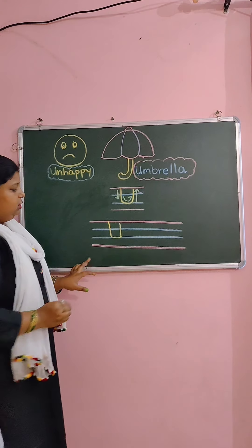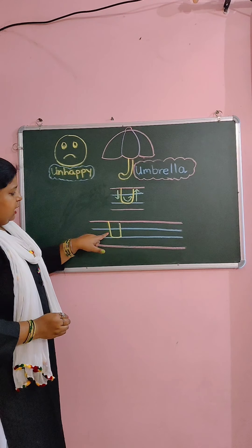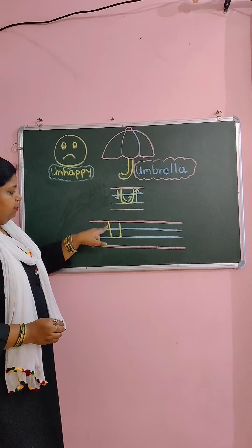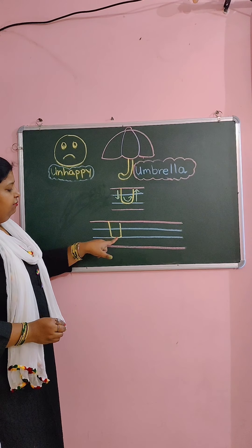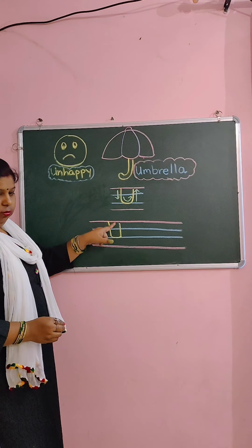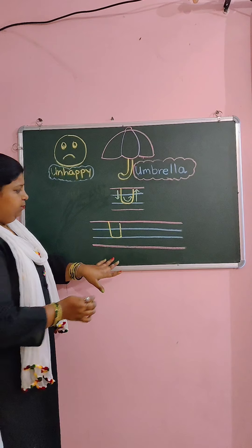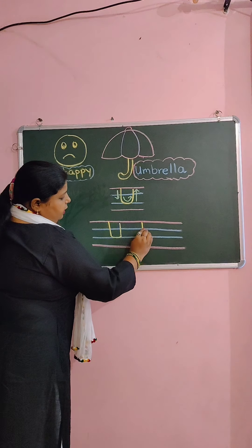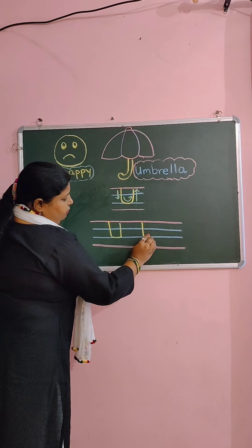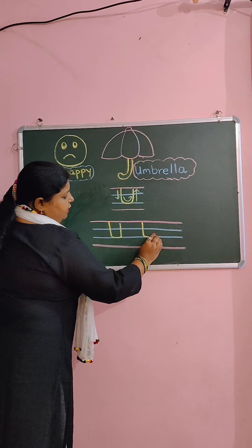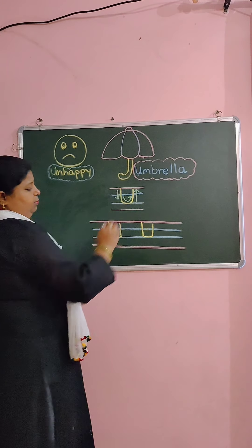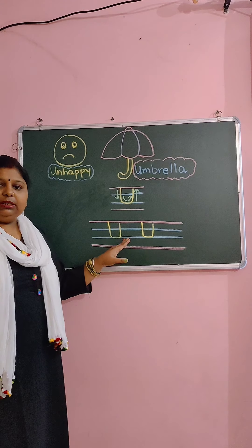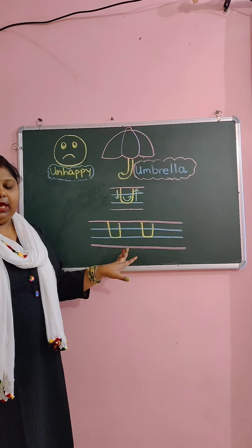Letter U: standing line, curve, standing line. Up to down, left to right, down to up. One more time: standing line up to down, curve left to right, standing line down to up. Letter U. Practice in your book and copy as well.